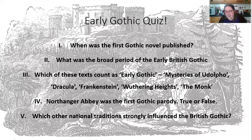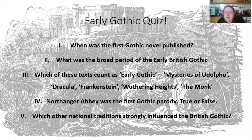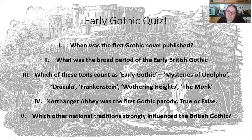The texts that count as early Gothic are Mysteries of Udolpho, The Monk, and Frankenstein — Frankenstein just in at the cusp in 1819. Wuthering Heights from the 1840s is slightly outside that period, working into the Victorian Gothic, perched between two popular periods of the Gothic. Dracula is of course much later — late Victorian.